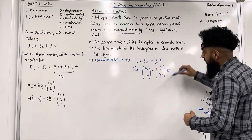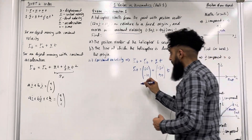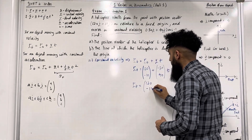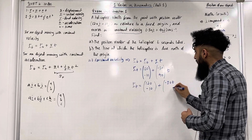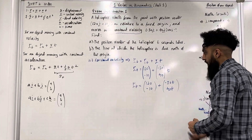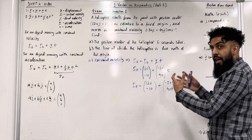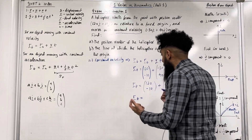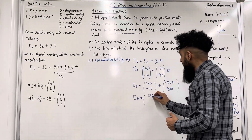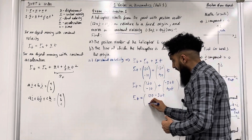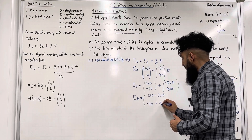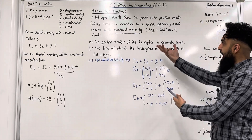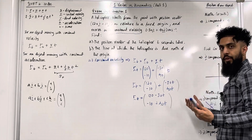Multiplying through, R(T) = (120, −10) + (−30T, 40T). Adding the i and j components together gives us the single position vector: (120 − 30T, −10 + 40T) metres. That is the position of the helicopter T seconds later.